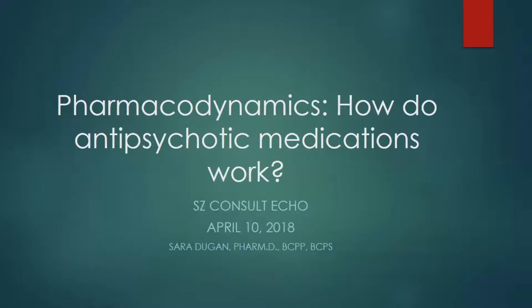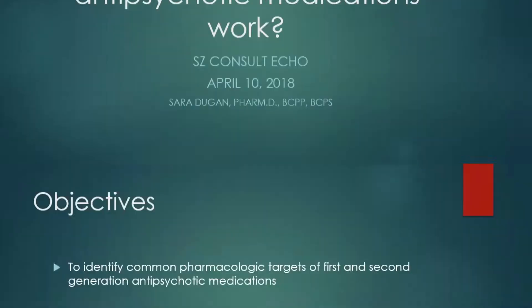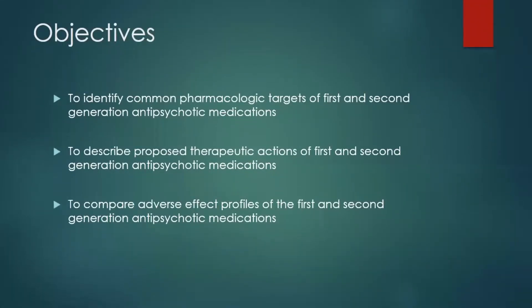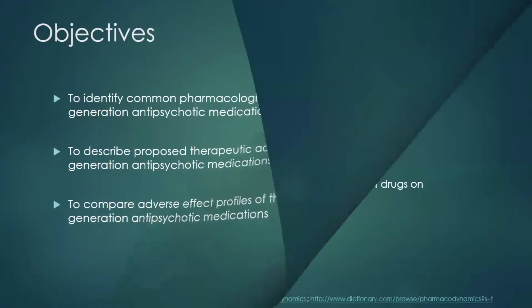We're focusing on the primary mechanisms of action, taking a step back to look at what exactly our antipsychotic medications are doing. Our objectives today: we're going to identify the most common pharmacologic targets — not all receptor profiles for all medications, but the main ones — and look at proposed therapeutic actions as well as adverse effect profiles. Sometimes the action is what we desire, and other times it may be causing unintended effects.